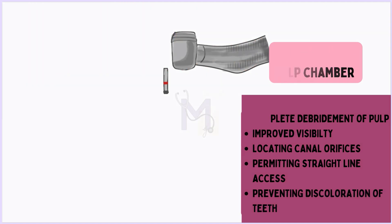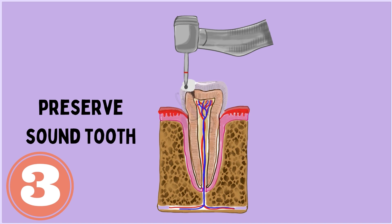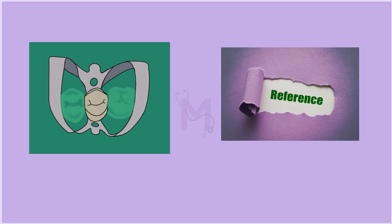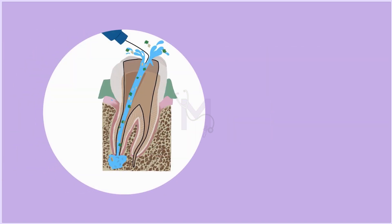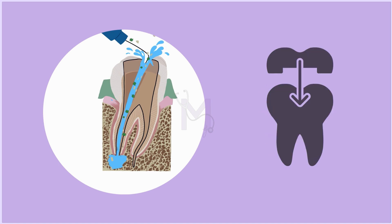The third objective is to conserve sound tooth structure as much as possible. The presence of sound tooth structure allows rubber dam application, a stable reference point, flooding of the chamber with irrigant, and support for temporary restoration.